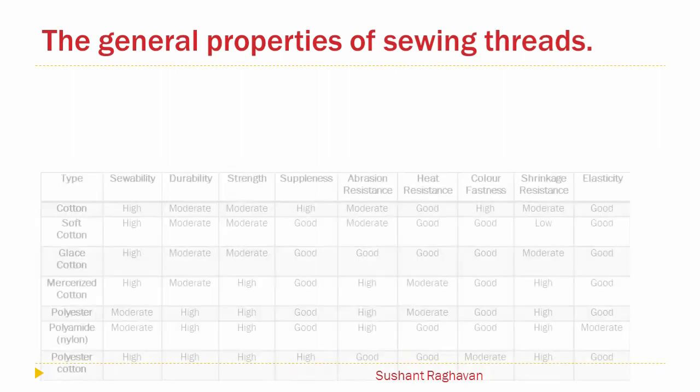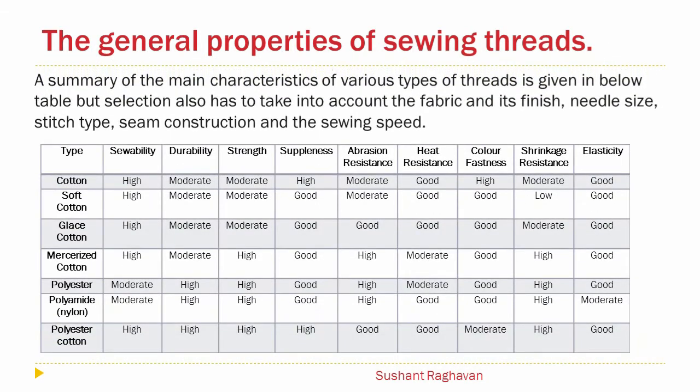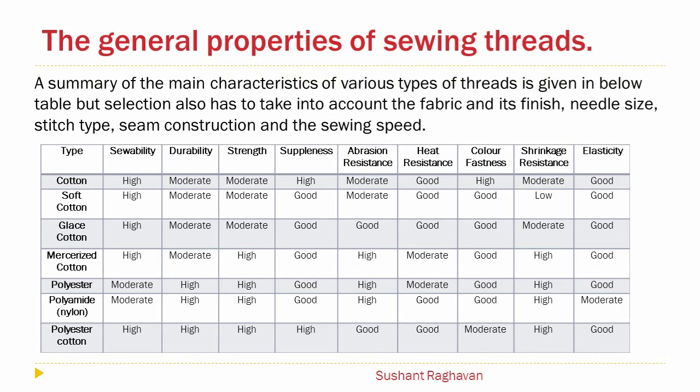The general properties of sewing threads. A summary of the main characteristics of various types of threads is given in the table below, but selection also has to take into account the fabric and its finish, needle size, stitch type, seam construction, and sewing speed. The characteristics covered in the table include thread types — soft cotton, glazed cotton, mercerized cotton, polyester, polyamide, and polyester-cotton — rated across sewability, durability, strength, suppleness, abrasion resistance, heat resistance, color fastness, shrinkage resistance, and elasticity.